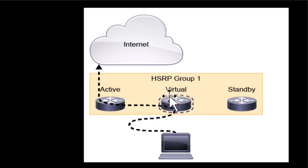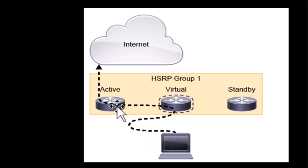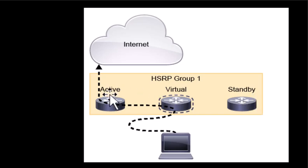In HSRP we configure the IP address of a floating virtual router as the gateway for the hosts, not the actual router IP address. If you configure the actual router's IP address as the gateway and that router goes down, all the PCs that have that router's IP as their gateway will lose network connectivity.